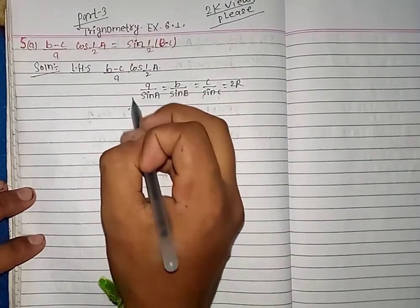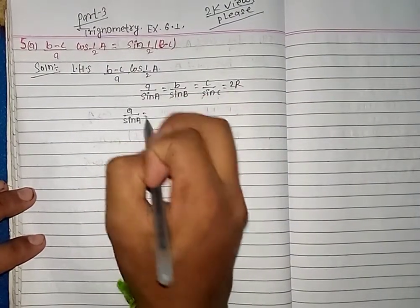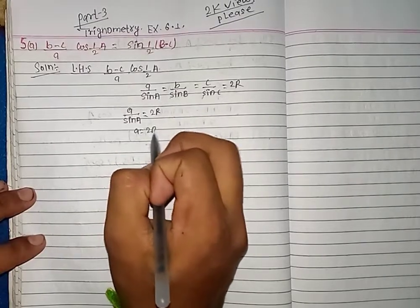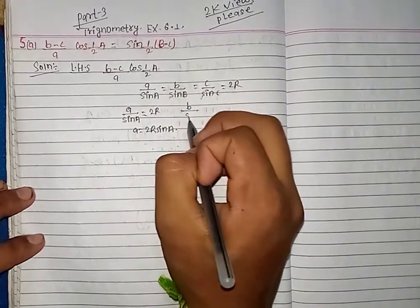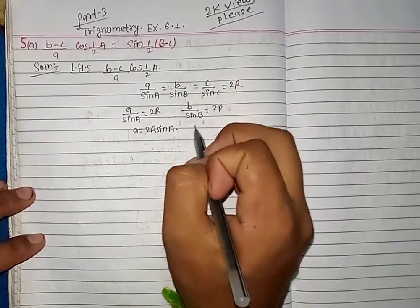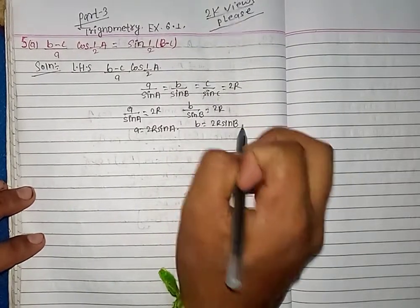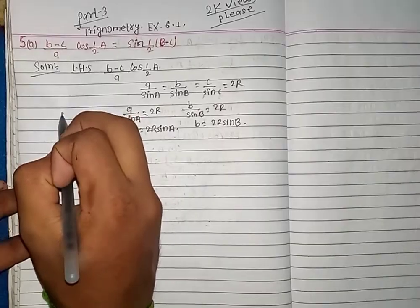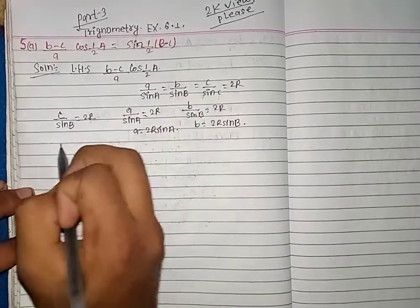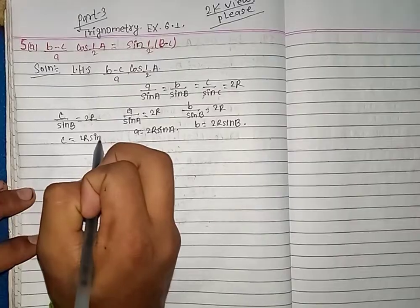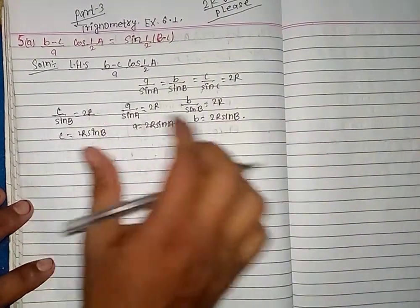So, what is the value? a/sin A = 2R, so a = 2R·sin A. And this theory gives b = 2R·sin B, and c = 2R·sin C.